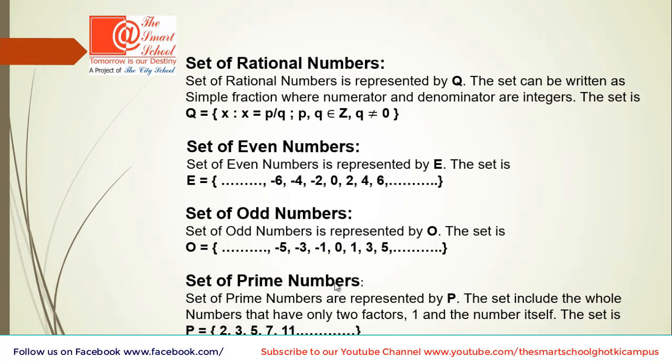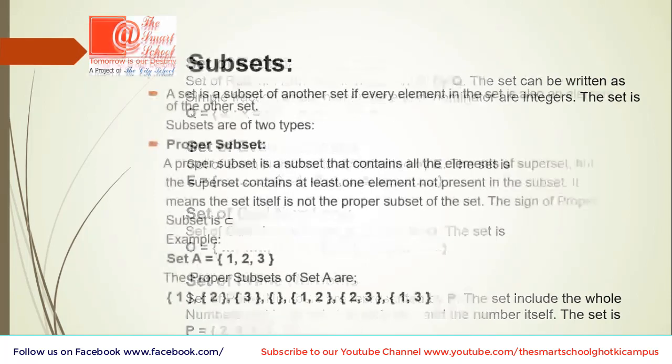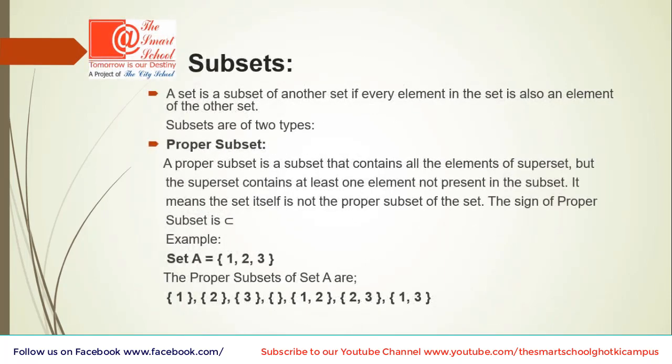Now, set of prime numbers. Yes, set of prime numbers are represented by P and the set includes the whole numbers that have only two factors, 1 and the number itself. The set is P equals 2, 3, 5, 7, 11. And one interesting thing that 2 is the only even number which is part of the set of prime numbers. I hope you revised all these things which you already know.